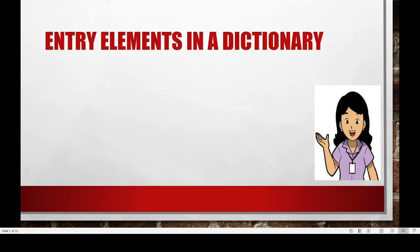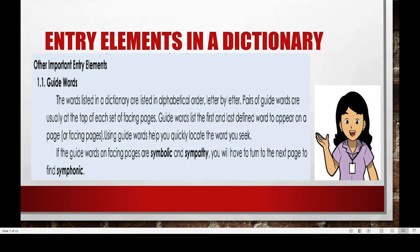Here are the entry elements in a dictionary. The first one are the guide words. The words in the dictionary are listed alphabetically, letter by letter. Pairs of guide words are usually at the top of each set of facing pages. Guide words use the first and last defined word to appear on a page. Using these guide words will help you quickly locate the word that you are looking for. So if the guide words on facing pages are 'symbolic' and 'sympathy', you will have to turn to the next page to find the word 'symphonic'.